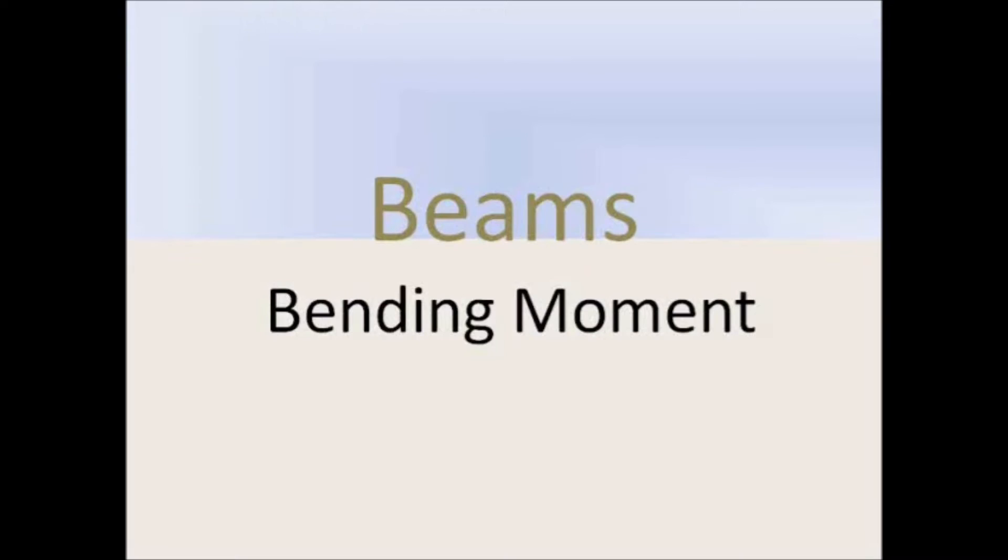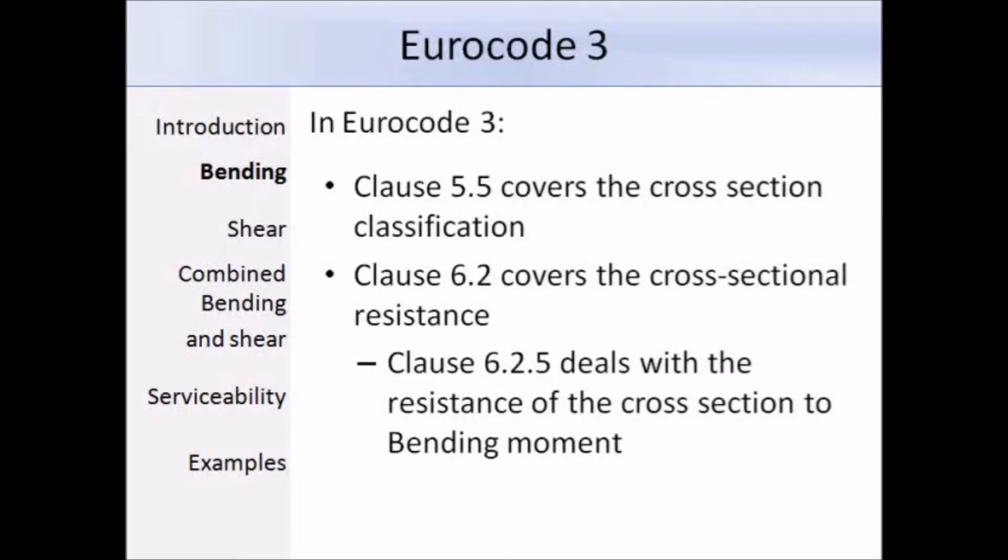Now we can begin this section which covers the resistance of the beam to bending moment. Bending represents the in-plane flexural strength of the beam with no account for lateral torsional buckling and is covered in clause 6.2.5, which is a subsection of clause 6.2, which is to do with the cross-sectional resistance. Since the resistance of the bending moment is dependent on the section class, we will also have to refer to clause 5.5.